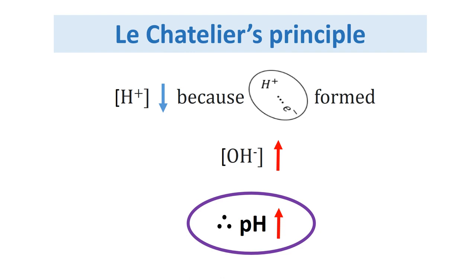Once the hydrogen electron pairs are formed, the concentration of hydrogen ion in the water ionization equilibrium process is reduced and the ion of hydroxyl increases. When the ion of hydroxyl increases, the pH of the water will be increased. This is the principle of Le Chatelier.